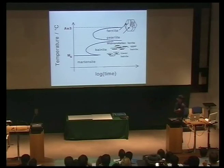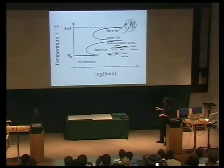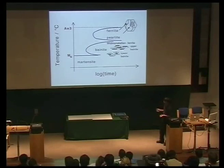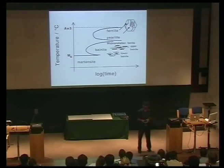Going back to this diagram: we have covered ferrite, pearlite, martensite, and bainite. And there is this strange thing here — Widmanstätten ferrite. What is it?